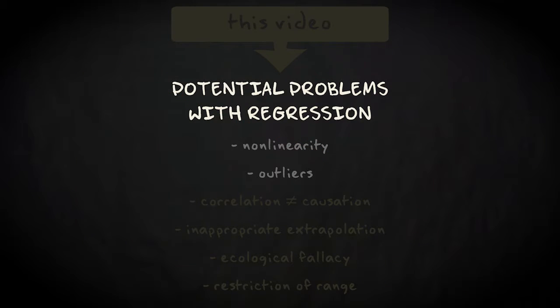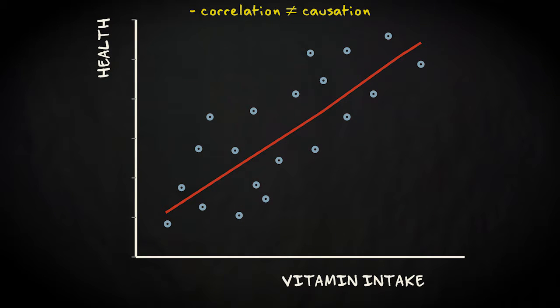Another problem is erroneously inferring causation from correlation. For example, just because regular intake of vitamin supplements is related to greater health, this doesn't mean we can infer use of supplements improves health.